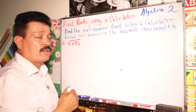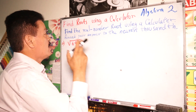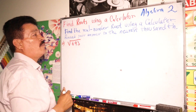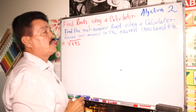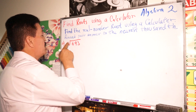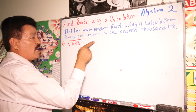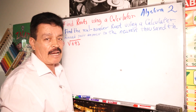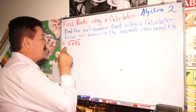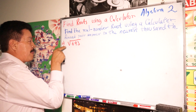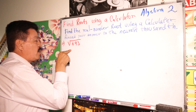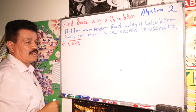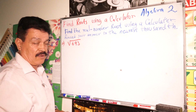Let's find the root using a calculator. Our problem: find the real number root using the calculator, round your answer to the nearest thousandth. Our problem is the square root of 693.